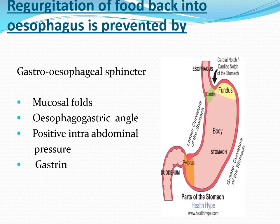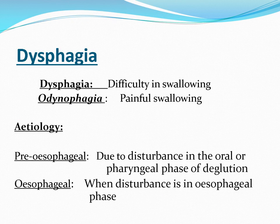Regurgitation of food back into the esophagus is called GERD — gastroesophageal reflux. In normal individuals it is prevented by mucosal folds, the gastroesophageal angle, positive intra-abdominal pressure, and the gastrin hormone, which causes increased acid secretion from the stomach but also causes constriction of the cardiac end of the esophagus.